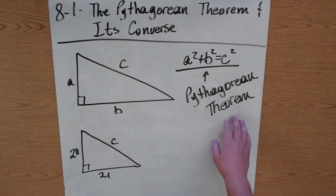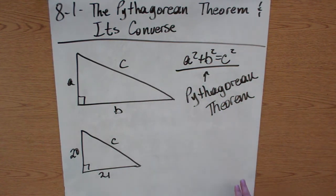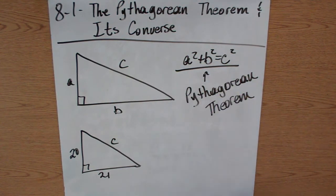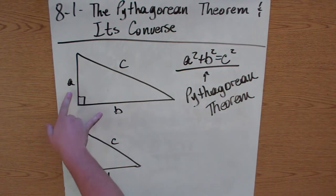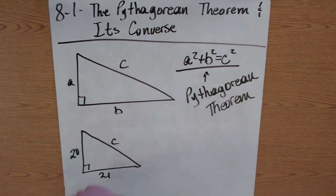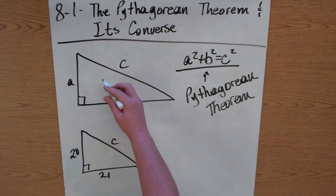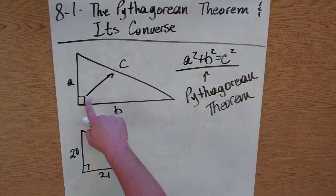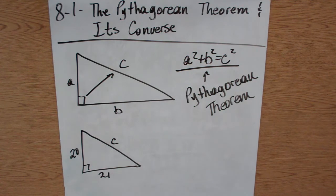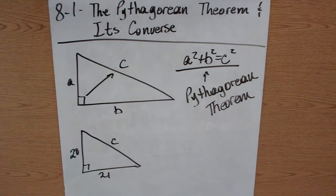The Pythagorean Theorem, a squared plus b squared equals c squared, can only be used in right triangles. A and b are the two legs of the triangle, and c is the hypotenuse. The hypotenuse is always the side opposite the right angle, and in a right triangle it will always be the longest of the three sides.